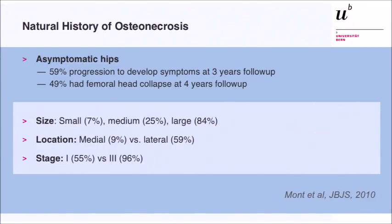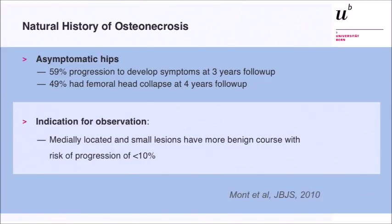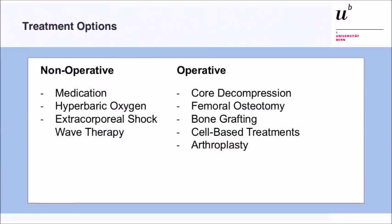Bilateral involvement is very often, about 80%, so when you make a diagnosis for one side, you often see that the other side is also affected. Even in asymptomatic hips, 60% develop symptoms within three years and about 50% show collapse within four years. Mont concluded that the only lesions which can be observed without treatment are small, medially located lesions showing a benign course with progression in less than 10%. All others, whether symptomatic or not, should need some action.